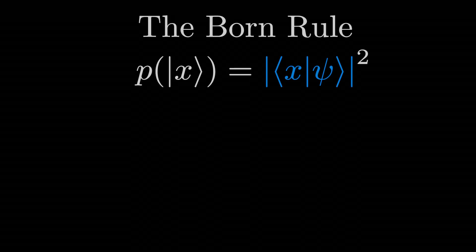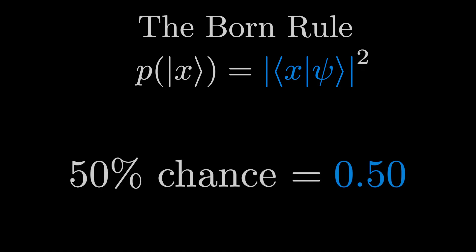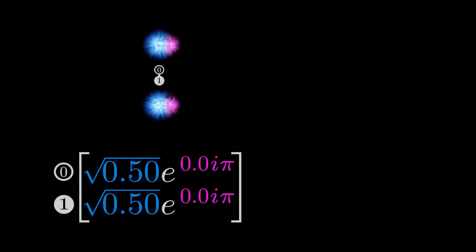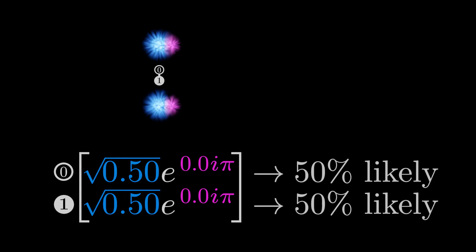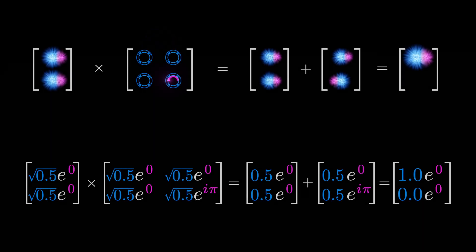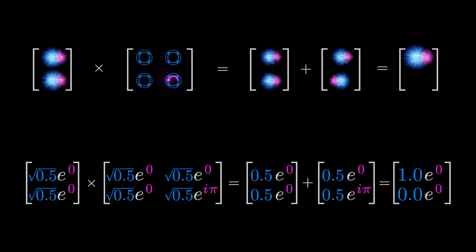To make this work, we utilize a clever trick called the Born rule. What it says is that, instead of each amplitude directly corresponding to a probability, we instead square it to get a probability. For example, an amplitude equal to the square root of 50% represents a measurement that is 50% likely. This simple trick is incredibly effective, and it clears our problem right up. A 50-50 qubit correctly gets converted back into its original state.